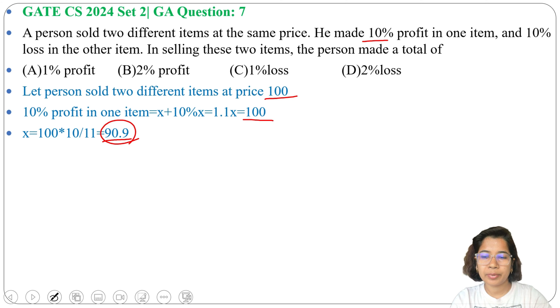Now the other item, he sold at a loss of 10%. A loss of 10% means the cost price is more than 100. Let that item's cost price be Y.